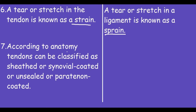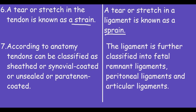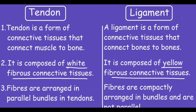According to anatomy, tendons can be classified as synovial-coated or paratenon-coated. Ligaments are further classified as fetal remnant ligaments, peritoneal ligaments, and articular ligaments.